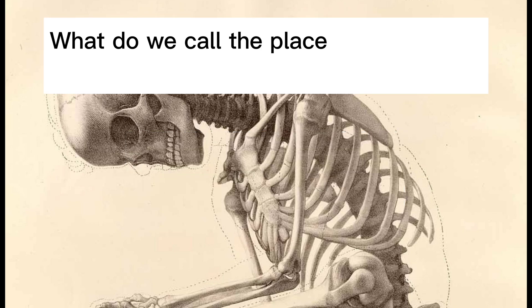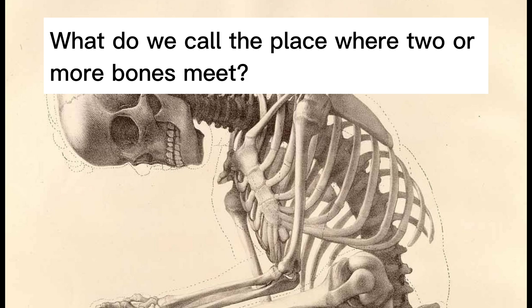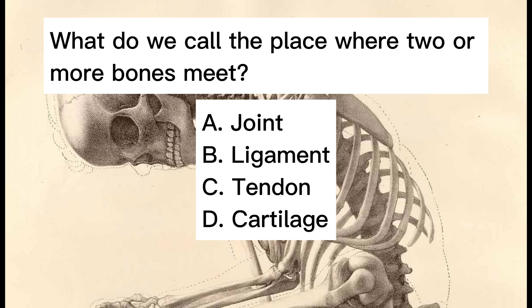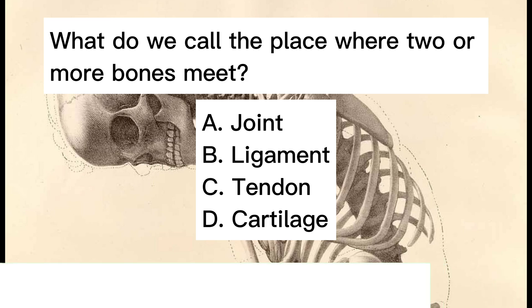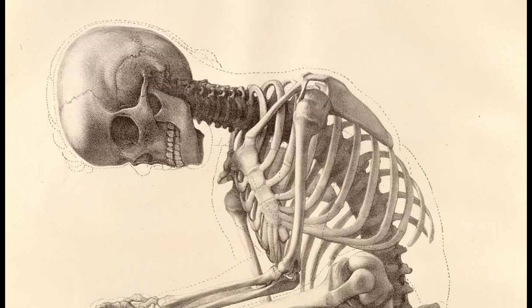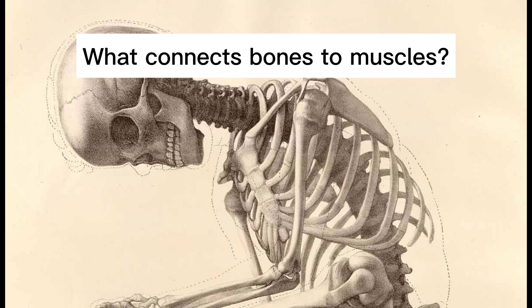What do we call the place where two or more bones meet? A. Joint. B. Ligament. C. Tendon. D. Cartilage. Answer: A. Joint.